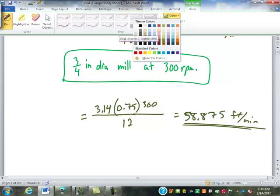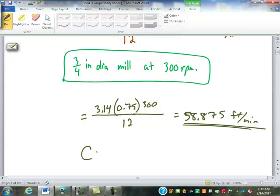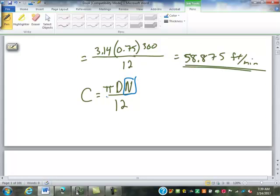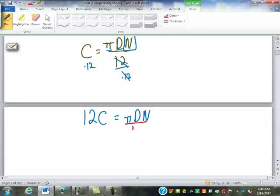Now most of the time, you guys are looking at setting up a machine, trying to figure out how many RPMs it's supposed to be turning. So you would be looking at rearranging this formula for N. If I wanted to have N by itself here, I have to get rid of pi, D, and 12. So I'm going to multiply both sides by 12. That gives me 12C equals pi DN. Then I'm going to divide both sides by pi D. So we get N equals 12 times the cutting speed over pi times diameter.